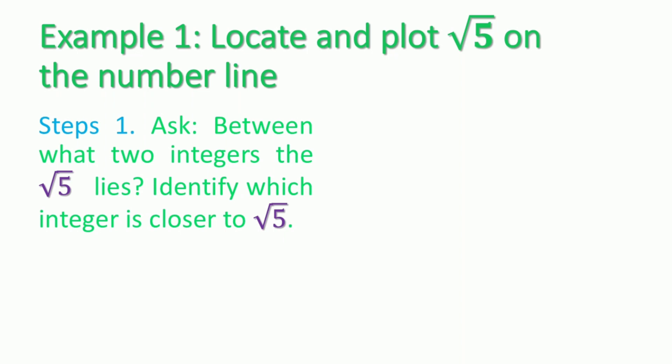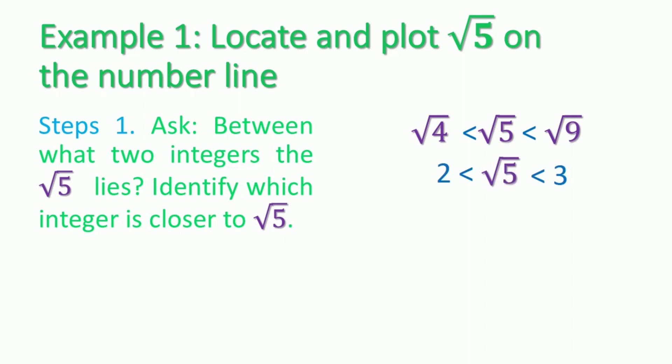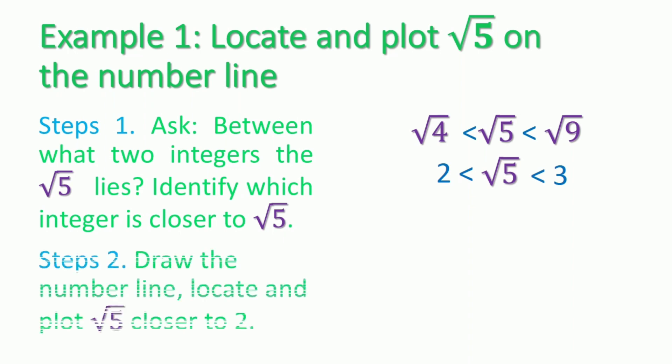We have this inequality sentence showing the square root of five is found between the square root of four and the square root of nine. The square root of four is two, and the square root of nine is three. Therefore, the square root of five is between two and three.